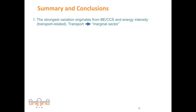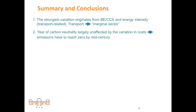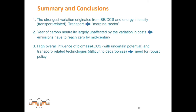For renewables, decreasing sensitivity with policy stringency doesn't mean they play a minor role, but rather that in the power sector the substitutability of options is high. To summarize: the stronger variation originates from bioenergy and CCS, but also from transport-related energy intensity. This makes transport the marginal sector — the one setting costs and prices. The year of carbon neutrality is largely unaffected by variation in technology costs, meaning emissions have to reach zero by mid-century. The high overall influence of biomass, CCS, and transport-related technologies highlights the need for robust policy support to achieve a fast transition.